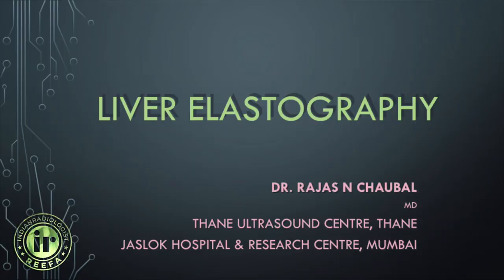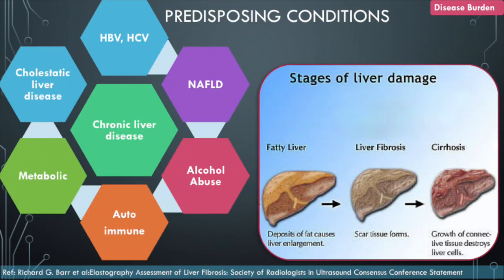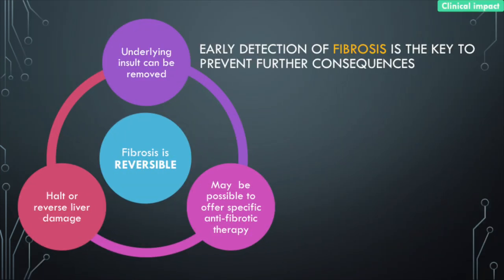Today I'm discussing liver elastography — just a brief background of what the problem is. There's a huge prevalence of liver diseases in India, and what is assuming epidemic proportions is non-alcoholic fatty liver disease, which can affect almost 35% of the population. These livers behave very similar to alcoholic liver diseases. Irrespective of the predisposing condition, the pathology almost remains the same: development of fibrosis due to deposition of collagen within the tissues, eventually leading to cirrhosis with nodular liver and architectural distortion. Cirrhosis is a clinical problem because it can lead to portal hypertension and even HCC. The key is to detect fibrosis at a very early stage, because fibrosis is potentially reversible and we may be able to halt or even reverse liver damage.